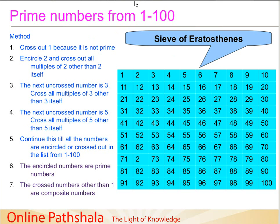The first step is to cross out the number 1 because it is not prime. So what I am doing here is I have crossed out, made an X on the number 1. First step is done. Then the second step is to encircle 2 and cross out all the multiples of 2 other than 2 itself.